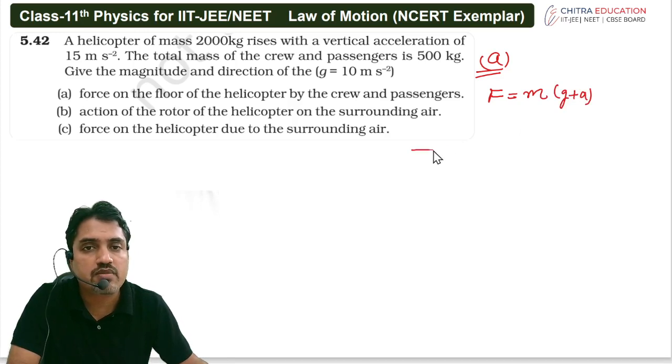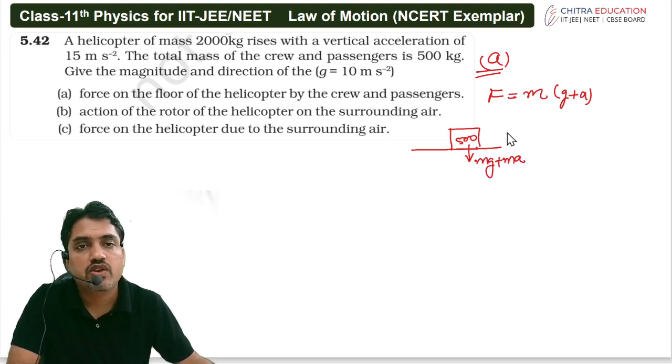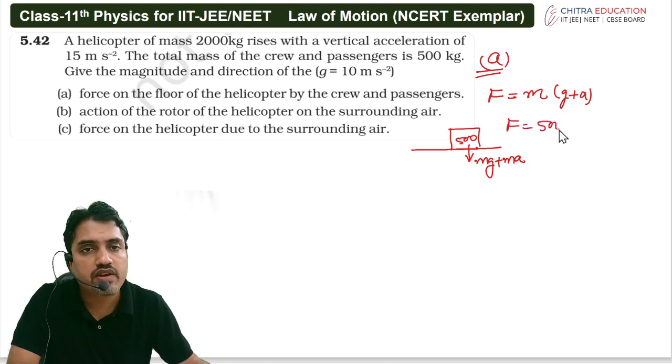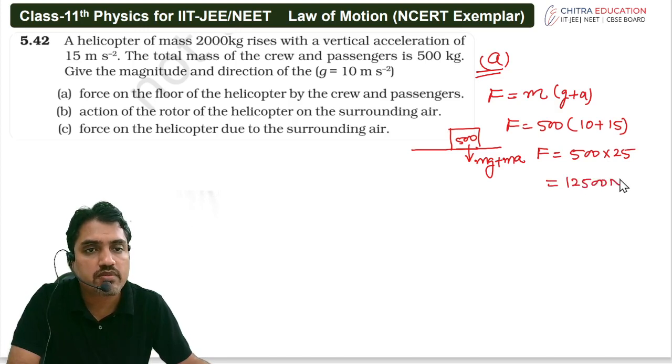Because here we talk about the floor, so the total mass of 500 kg is equal to Mg plus the pseudo force MA also will work. So this F is equal to 500 into G, G ka value kitna hai 10 aur A ka value kitna hai 15. So this F is equal to 500 into 25 and it is equal to 12500 Newton.